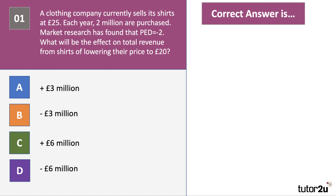Here's our first question. A clothing company currently sells its shirts at £25 a shirt, and each year 2 million are purchased. Market research has found that the coefficient of price elasticity of demand is 2 (or minus 2). What will be the effect on the firm's total revenue from selling shirts if they lower their price to £20? Press pause, have a go, and let's walk through it together when you're ready.